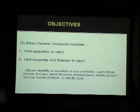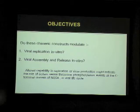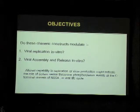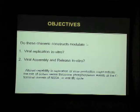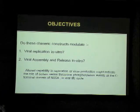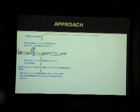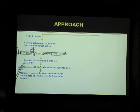The objectives of my study are: one, do these chimeric constructs modulate viral replication in vitro; and second, do these modulate viral assembly and release in vitro? If we do find an altered capability in replication or viral production in these chimeric strains, we can implicate the possible role of certain serine and threonine residues in phosphorylation events at the C-terminal domain in the viral life cycle. We do two separate experiments for replication and infection. For replication, this involves cloning our regions of interest into the following construct.